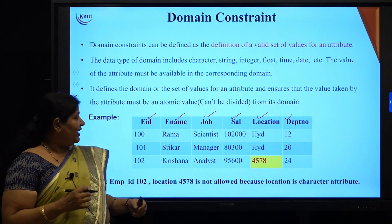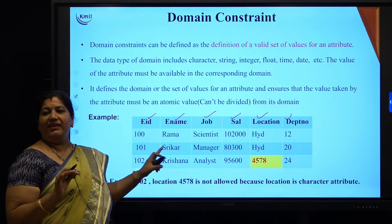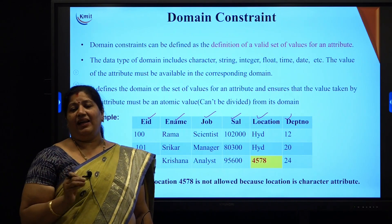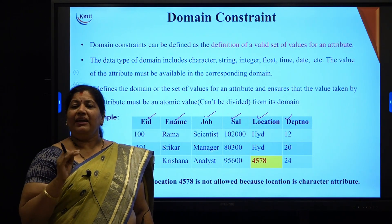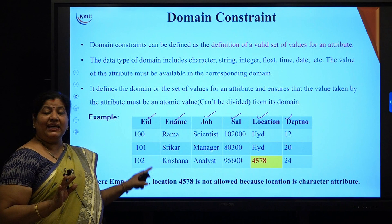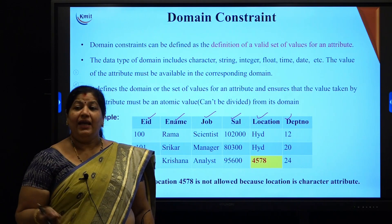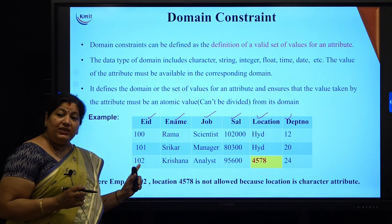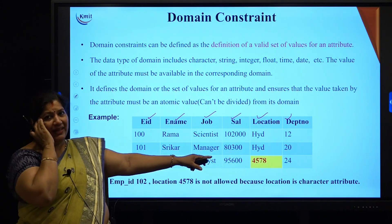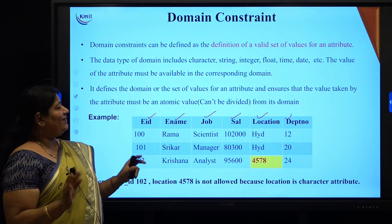We have already learnt about data types. I say that E name belongs to a string data type, so its domain — the valid values — can be any collection of alphabets, alphanumeric and certain valid special characters. For a numeric field like integer or float, it has a particular range. Further to that, I can even restrict the value to only up to a certain range, which we will see in another constraint called the check constraint. Basically, domain constraint defines the rule for the set of valid values.